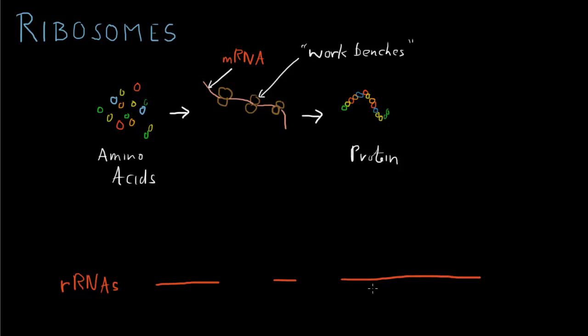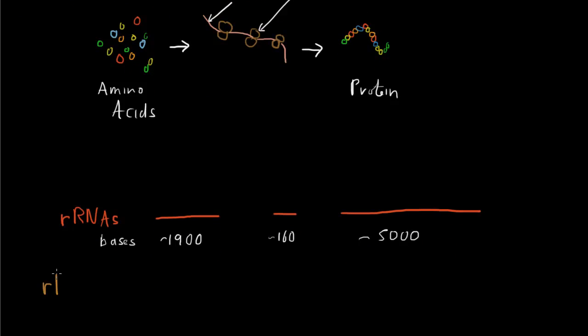About 5,000 bases long. And these are present in equal proportions so that for every medium sized ribosomal RNA, there's one small RNA and one large RNA. About 1,900 bases, 160 bases and about 5,000 bases.